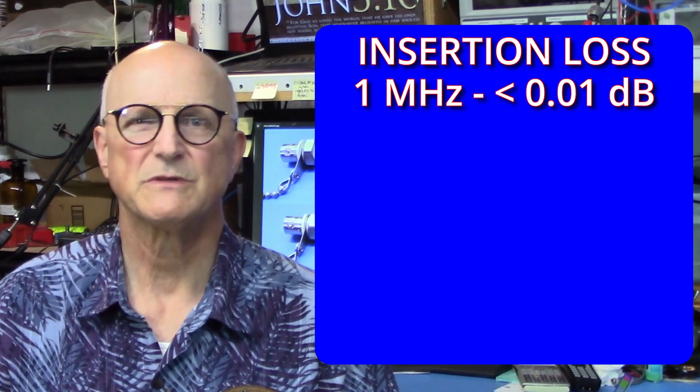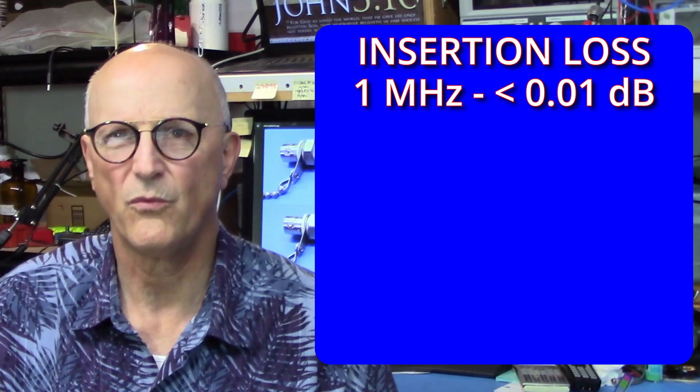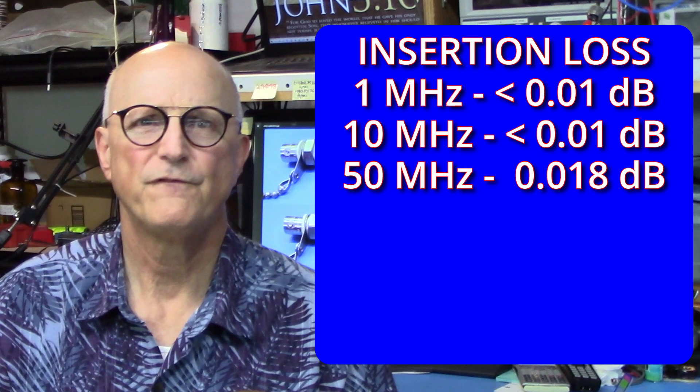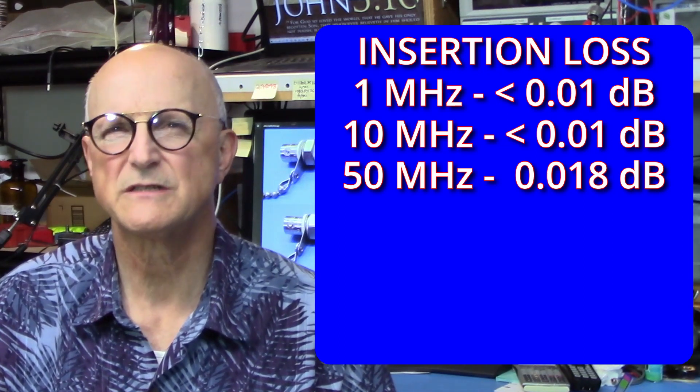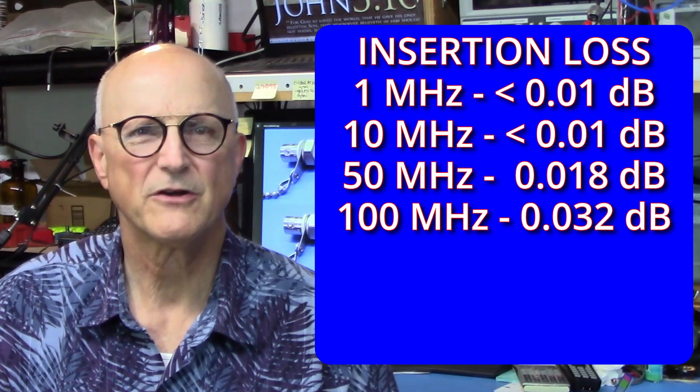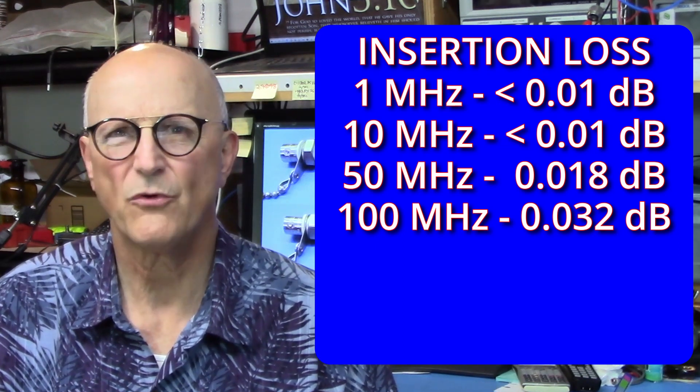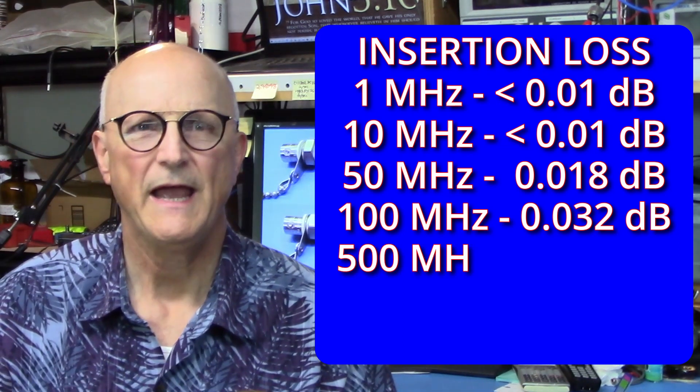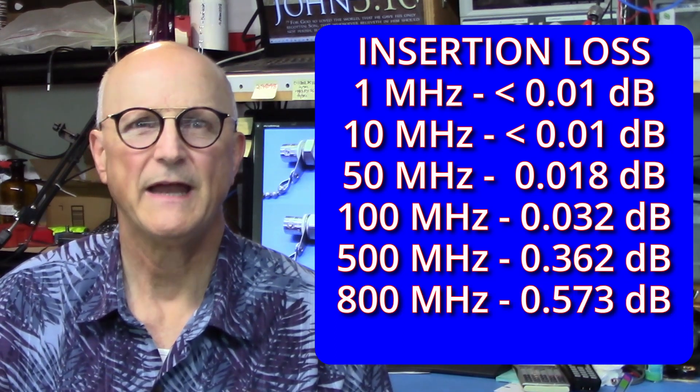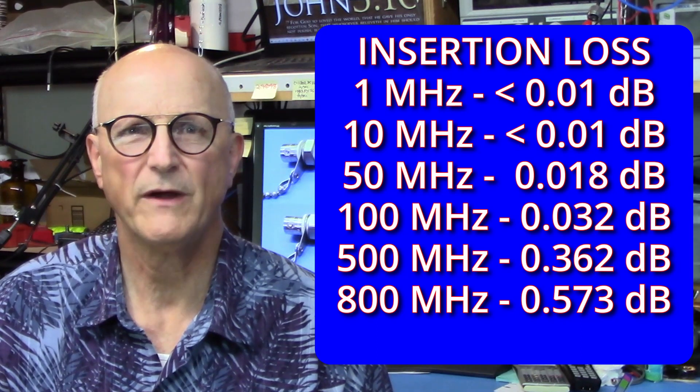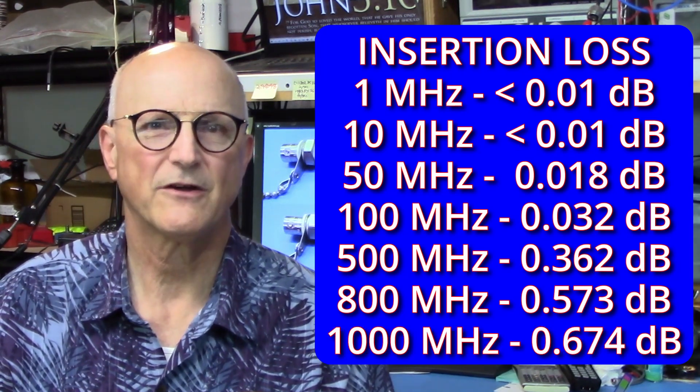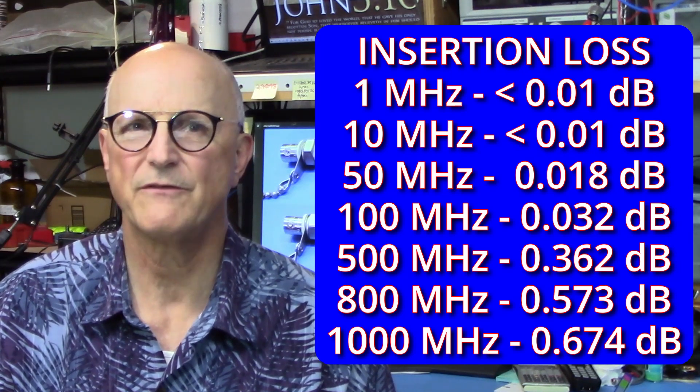At 1 megahertz, it was less than 0.01 dB. Same thing at 10 megahertz. At 50 megahertz, it was 0.018 dB. At 100 megahertz, it was 0.032 dB. At 500 megahertz, it was 0.362 dB. At 800 megahertz, it was 0.573 dB. And at 1 gigahertz, it was 0.674.